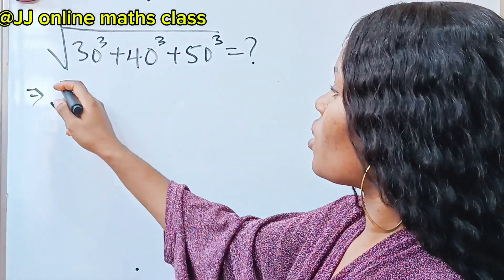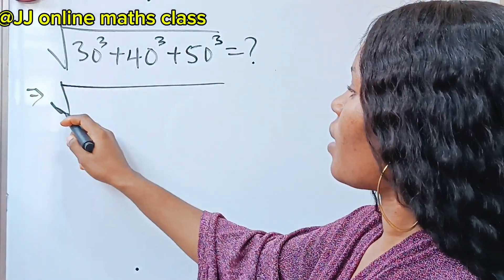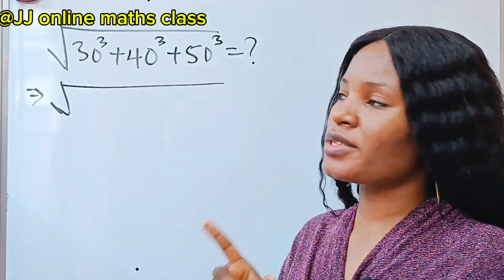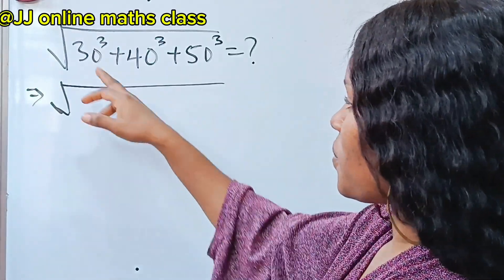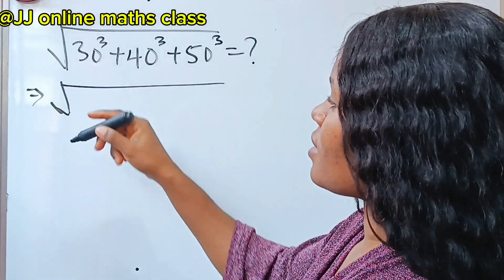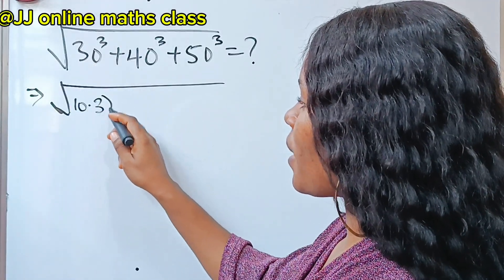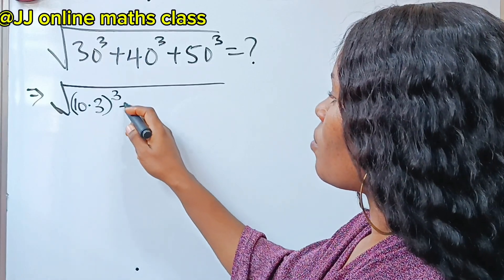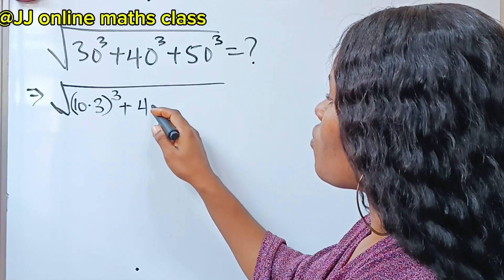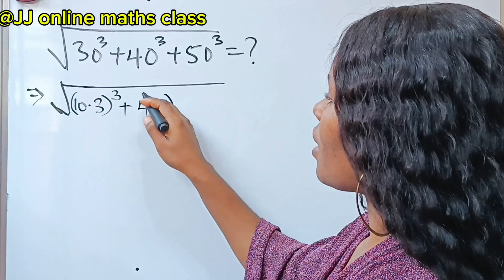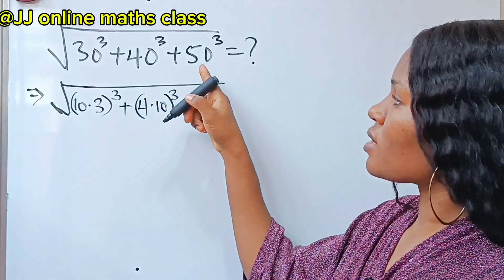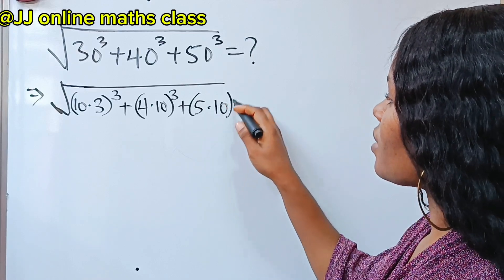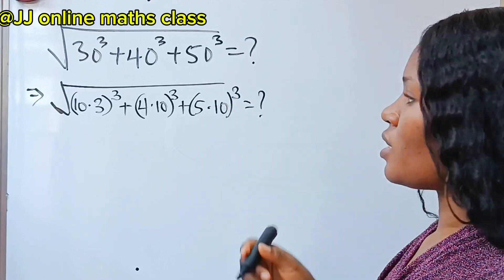First, let us simplify what we have here. I'm going to solve this using two methods. In the first method, we are going to write 30³ as 10 multiplied by 3, raised to the power of 3, plus 4 multiplied by 10 raised to the power of 3, plus 5 multiplied by 10 raised to the power of 3.